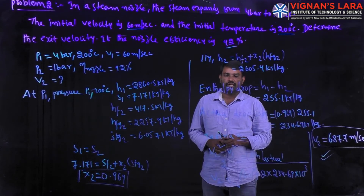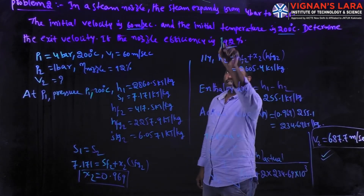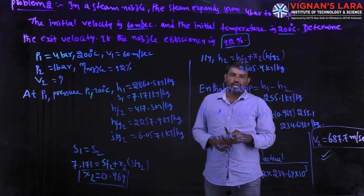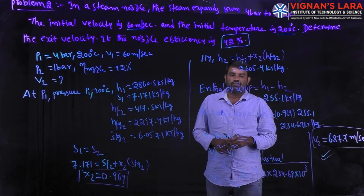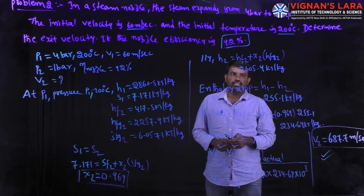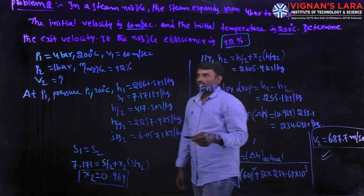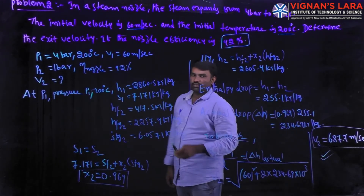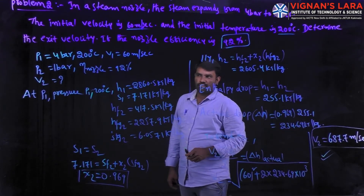In this problem, the efficiency of the nozzle is given as 92 percent. We have to find the actual exit velocity of the steam. Given data: P1 is 4 bar at 200 degrees centigrade, initial velocity V1 is 60 meters per second, exit pressure P2 is 1 bar, and efficiency of nozzle is 92 percent.